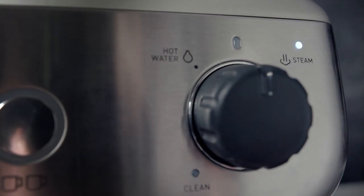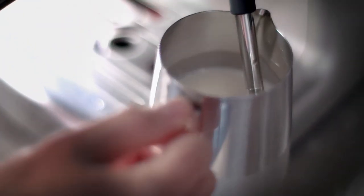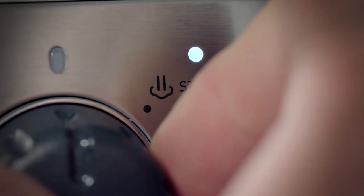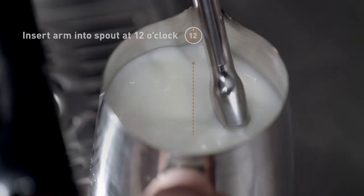Turn back the dial to the off position briefly. Place the steam wand inside the jug just below the surface of the milk. Turn the dial back to steam and start texturing the milk.